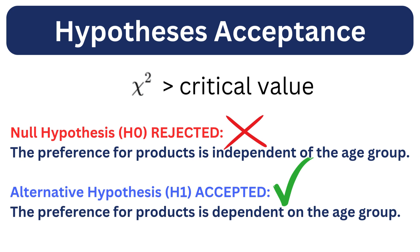Since in this case the chi-square value is greater than the critical value, we reject the null hypothesis, and it suggests that the product preference is dependent on the age group.